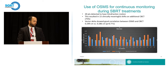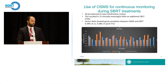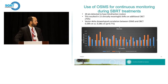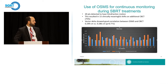We're still acquiring this data, but our initial results will be presented later this year. We've had 20 instances of interfraction motion detected by OSMS, resulting in 15 clinically meaningful shifts on additional cone beam CT — so about 75% of the time when we detect something on OSMS it leads to a clinically meaningful shift. We also saw very good correlation between the projected shift from OSMS and the actual shift on cone beam CT, right around three millimeters on average. The blue bars show the suggested OSMS shift and the orange bars show the actual shift performed based on cone beam CT, and most of those correlate very nicely.